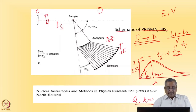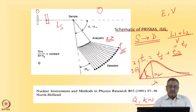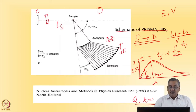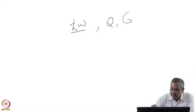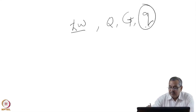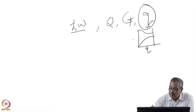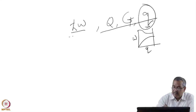The phonon dispersion relation is a different order of difficulty compared to powder neutron diffraction or even single crystal neutron diffraction. Because in these experiments, we need to be very careful about the incoming energy, the outgoing energy, and how to determine ℏω for a given momentum transfer, for a given reciprocal lattice vector, for a given phonon momentum vector. Ultimately, this is what we want to find — the dispersion relation as a function of Q.